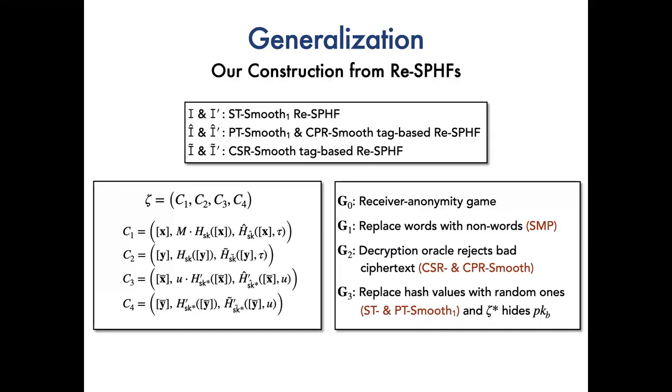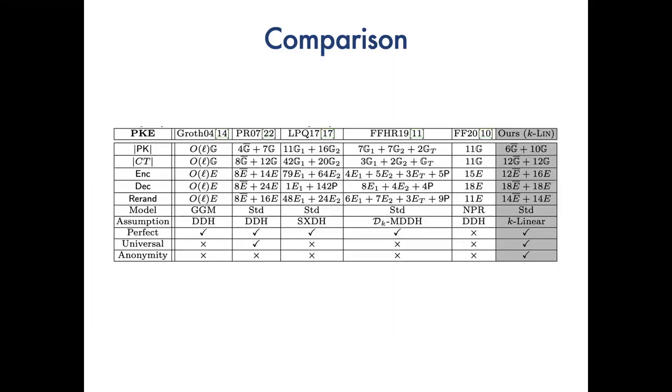The justification for receiver anonymity is indeed similar to above argument. In particular, the decryption oracle also relies on CSR and CPR smooth properties to reject all the bad ciphertext. In the end, the uniform distribution of all the hash values in zeta star implies the receiver anonymity in RCCA setting.